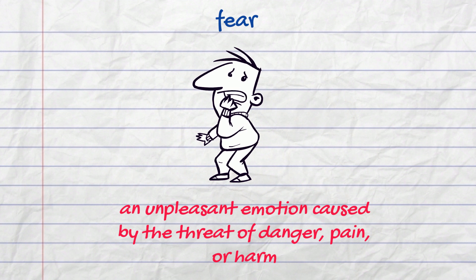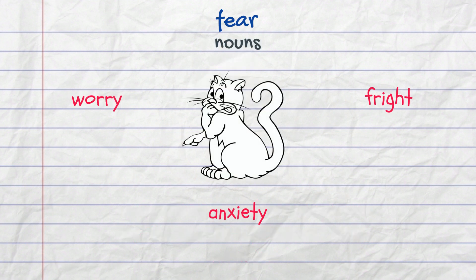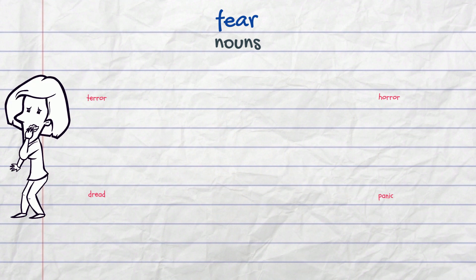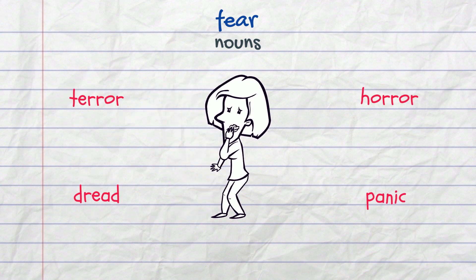Let's take a look at some vocabulary associated with fear. According to the Oxford dictionary, fear is an unpleasant emotion caused by the threat of danger, pain or harm. It has a lot of synonyms depending on how intense the fear is. A slight fear is a worry; next comes anxiety, which can be more severe. Another synonym is the word fright. Extreme fear is expressed by the words terror, dread, horror or panic.